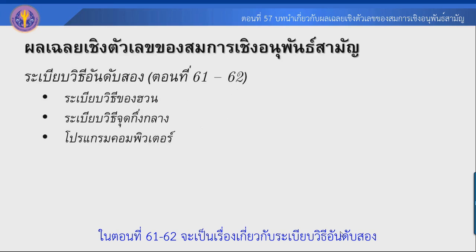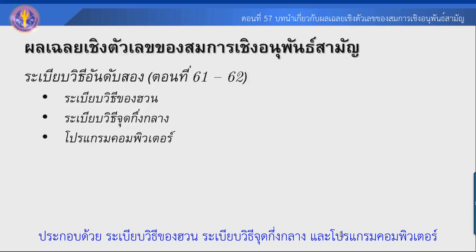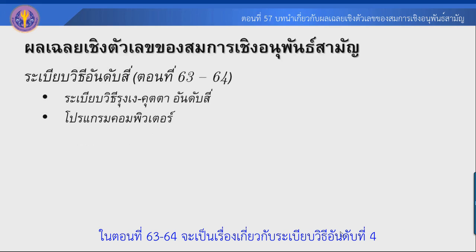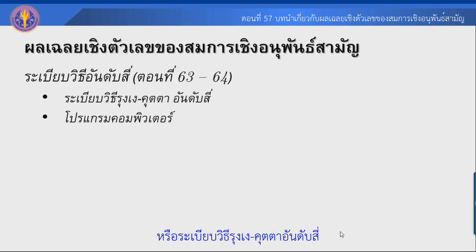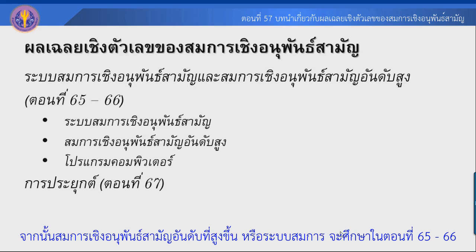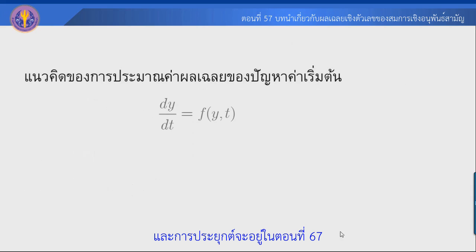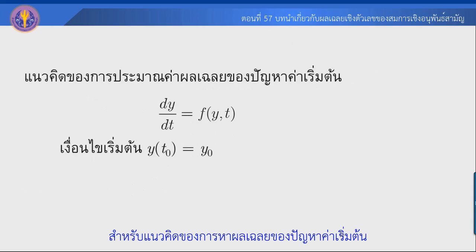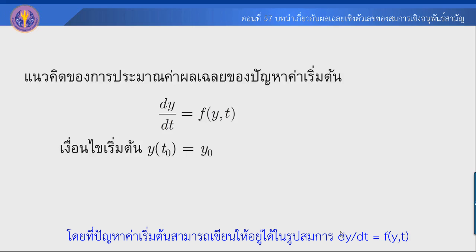In academic years 61-62, this represents part 2 of the development, which is part of the key events. By years 63-64, the 4th-order Runge-Kutta and computer programs were introduced, leading to the analogy of timing as the final framework for numerical methods.